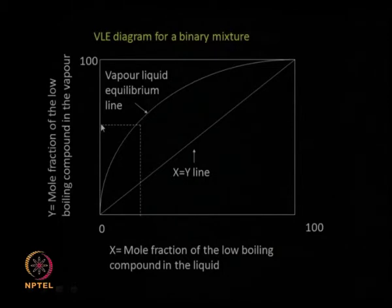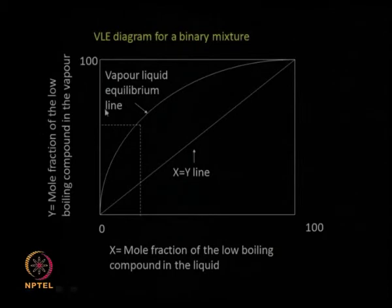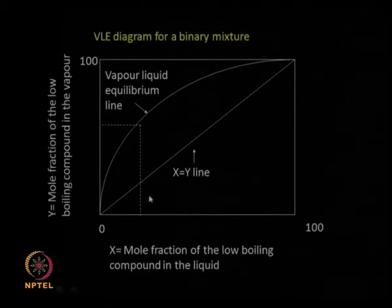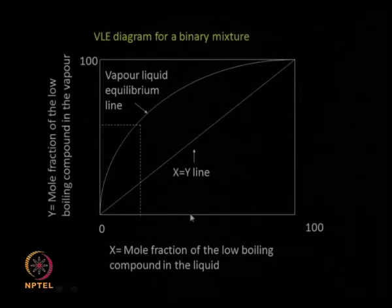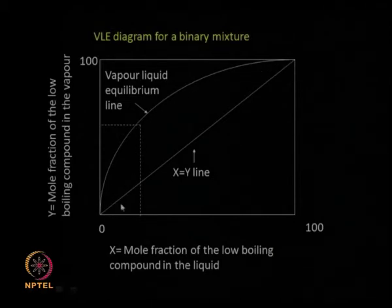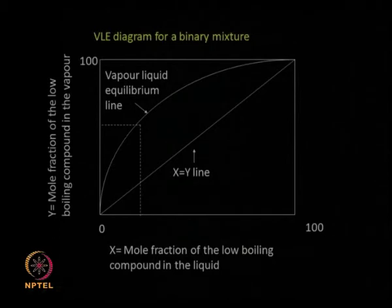Because there is more low boiling component in the vapor than in the liquid phase, any point on the VLE curve will be above the x = y line. If the graph is very close to the x = y line, the amount of low boiling component in the liquid and vapor phases will be equal — that is called a constant boiling mixture. In a binary system, one minus the other gives the concentration for the high boiler, so we always plot the VLE diagram for the low boiler.